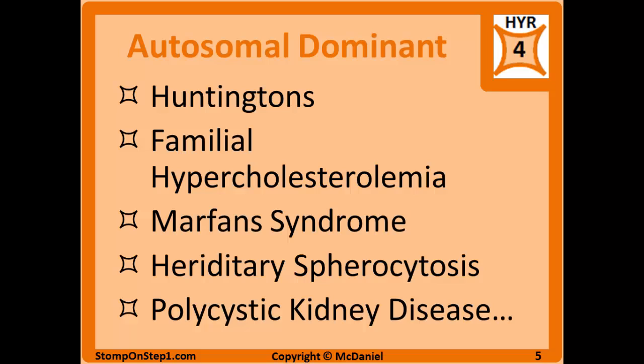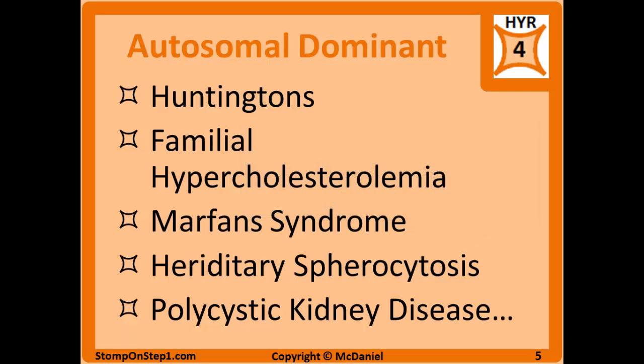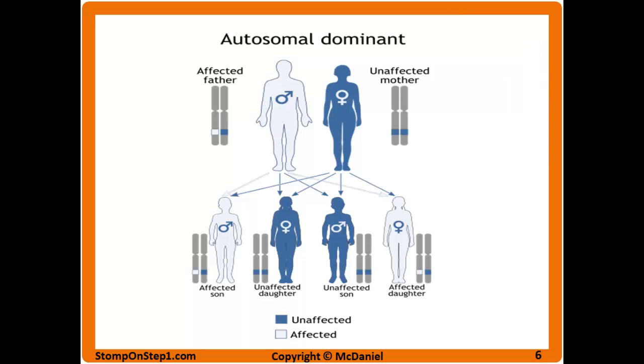There's a long list of diseases with autosomal dominant inheritance, but here are a few most commonly asked: Huntington's, familial hypercholesterolemia, Marfan syndrome, hereditary spherocytosis, and polycystic kidney disease. Here's another way to graphically depict autosomal dominant inheritance other than a Punnett square — you can pause the video and take a peek at that.